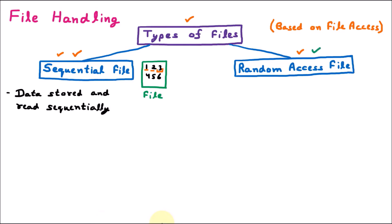In the random access file, it is not compulsory that data should be stored sequentially — it can be sequential or non-sequential. But let us assume the data is 1, 2, 3, 4, 5, 6. If I want to search for the third record, in random access we can directly go to the third record. That's why it is called random access — data is read randomly.